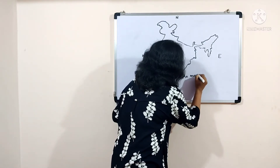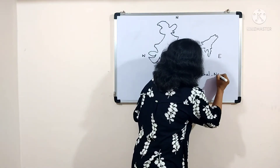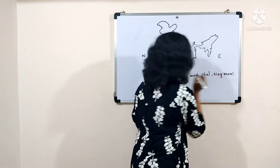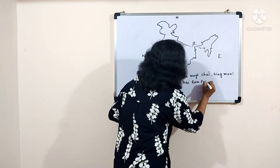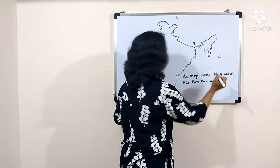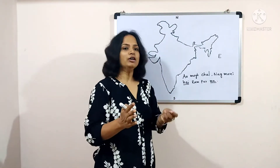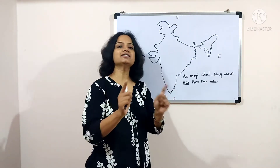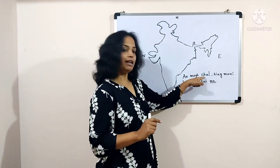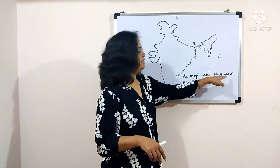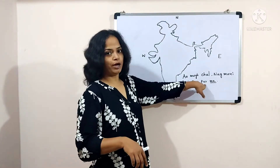The mnemonic sentence is: 'A Mig chal, din nag money hain ram poor meh.' Now here, 'hain' and 'meh' are used just to make the sentence complete — otherwise: A for Assam, Meg for Meghalaya, chal for Arunachal Pradesh, nag for Nagaland, mani for Manipur, ram for Mizoram, and poor for Tripura.